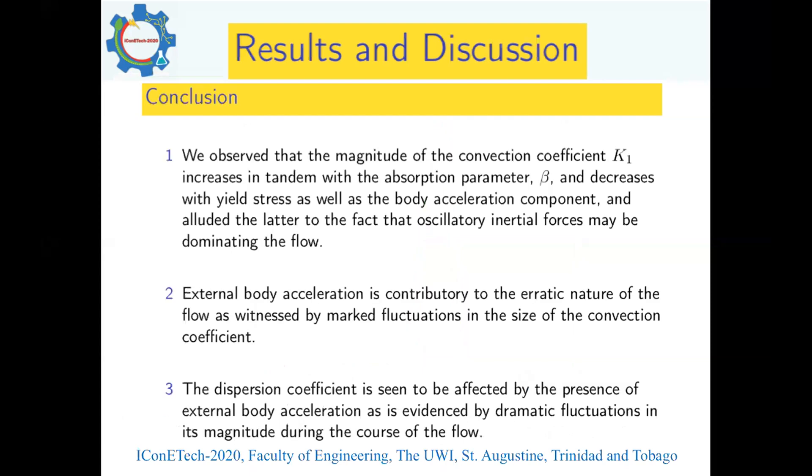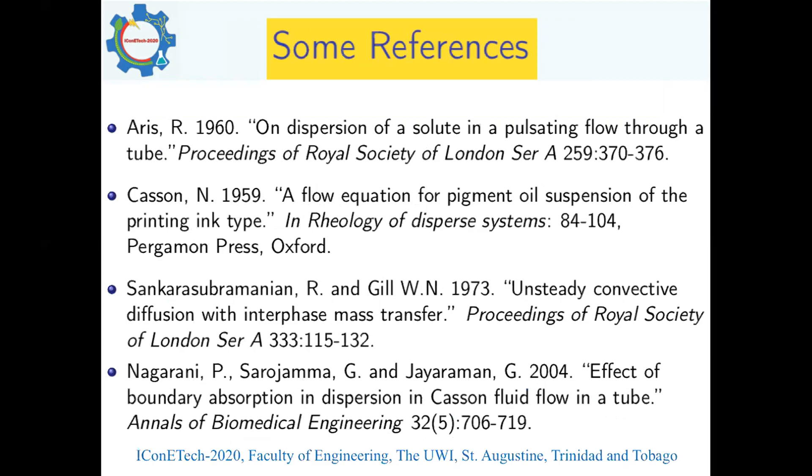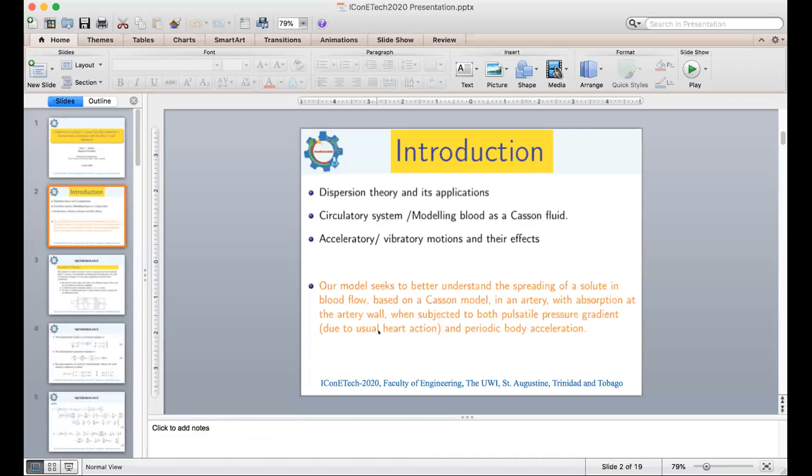In conclusion, we have observed that the magnitude of the convection coefficient K_1 increases in tandem with the absorption parameter beta and decreases with yield stress as well as body acceleration component. We attribute the latter to oscillatory inertial forces dominating the flow. External body acceleration is a very contributory factor to the erratic nature of the flow, as witnessed by marked fluctuations in the size of the convection coefficient. The dispersion coefficient is seen to be affected by the presence of external body acceleration, as evidenced by dramatic fluctuations in its magnitude during the course of the flow. Here are a few references, and that terminates my presentation. Thank you very much, I am here to entertain any questions.